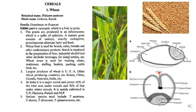Wheat flour is used for breads, cakes, biscuits and other confectionery products. Starch obtained from wheat is employed in the preparation of beer, industrial alcohol and other alcoholic beverages, and for sizing textiles. Wheat straw is used for weaving chairs, mattresses, stuffing, baskets, packing, and as feed.